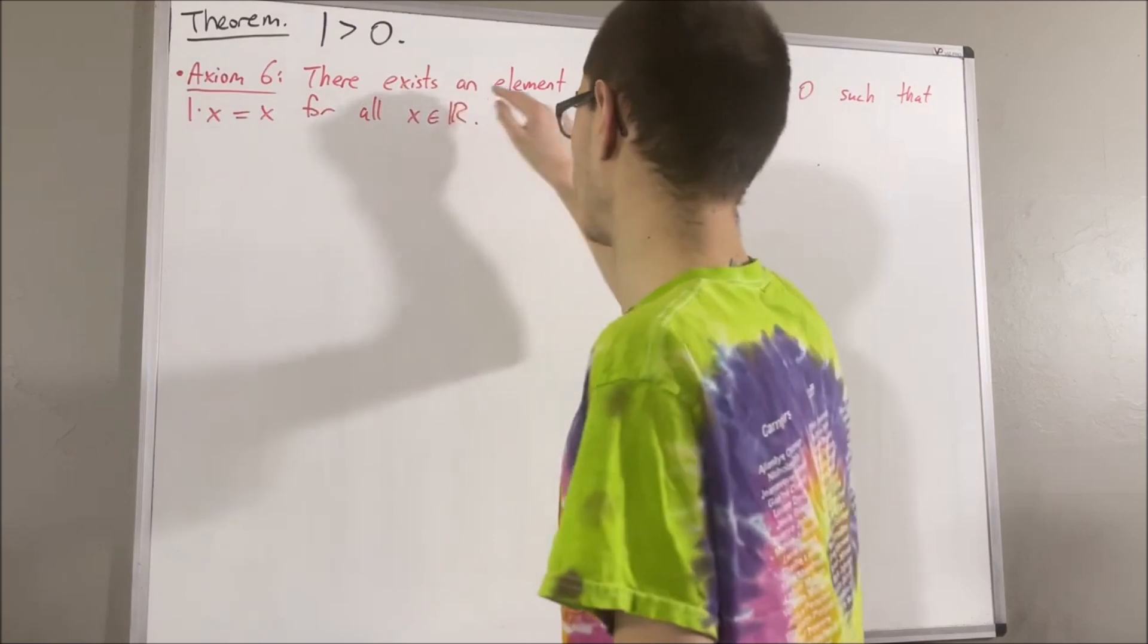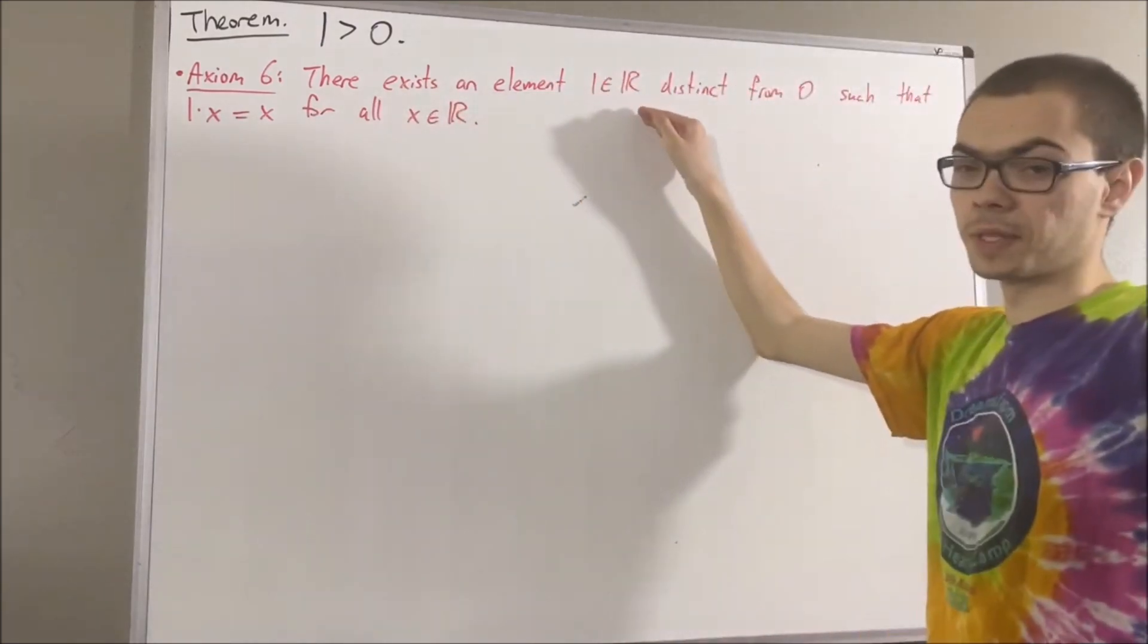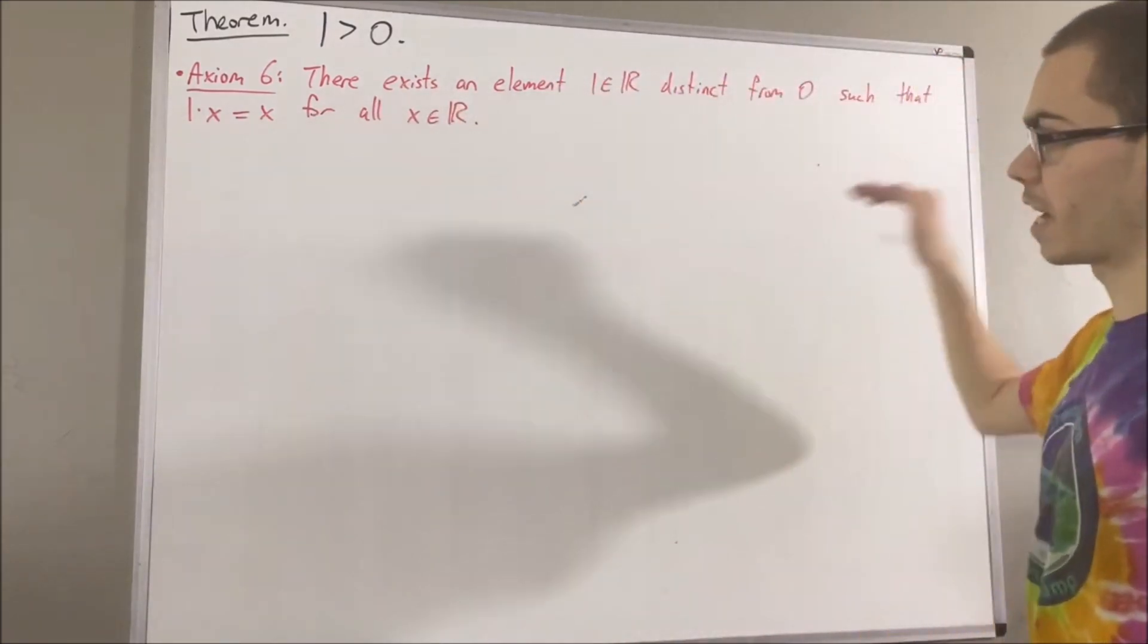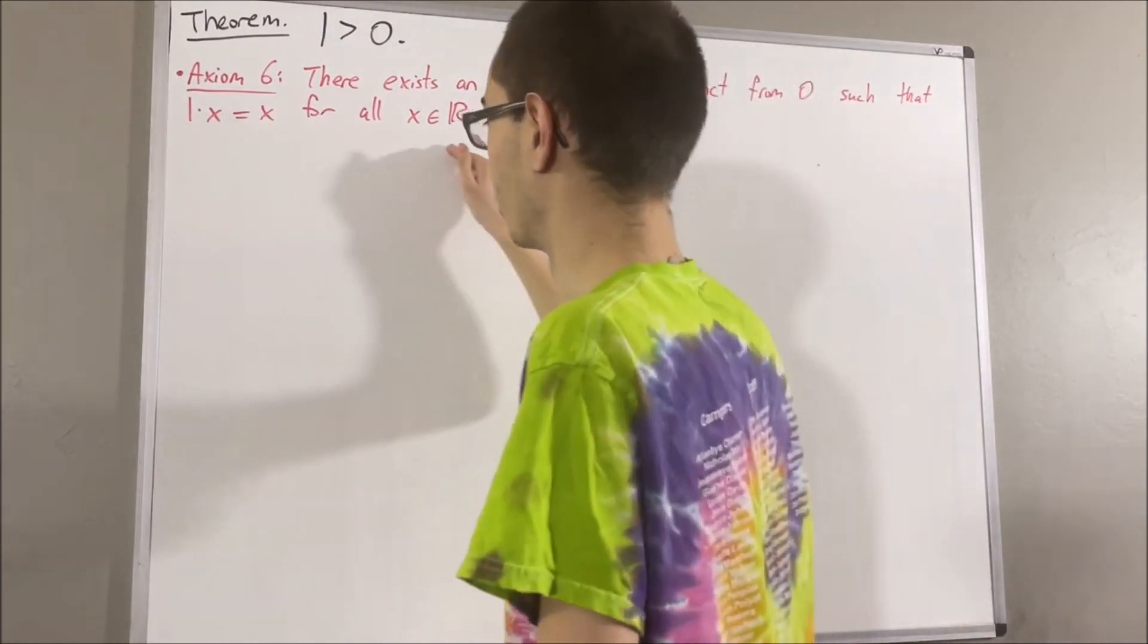Axiom 6 tells us that there exists a real number, which we call 1, that is distinct from 0, and has the property that 1 times x is equal to x for all real numbers x.